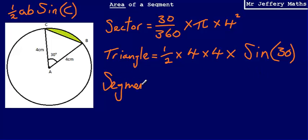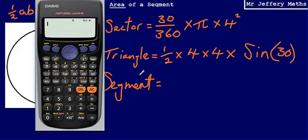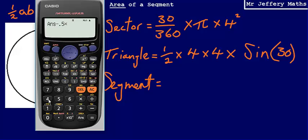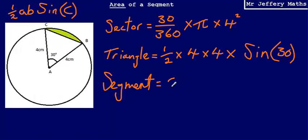Now all that's left is to subtract the two. I'm going to type this into my calculator: 30 over 360 multiplied by pi multiplied by 4 squared for the area of the sector, then subtract the area of the triangle, which is 0.5 times 4 times 4 times sine 30. That gives me an answer of 0.189 to three significant figures. We're dealing with centimetres, so that is centimetres squared.